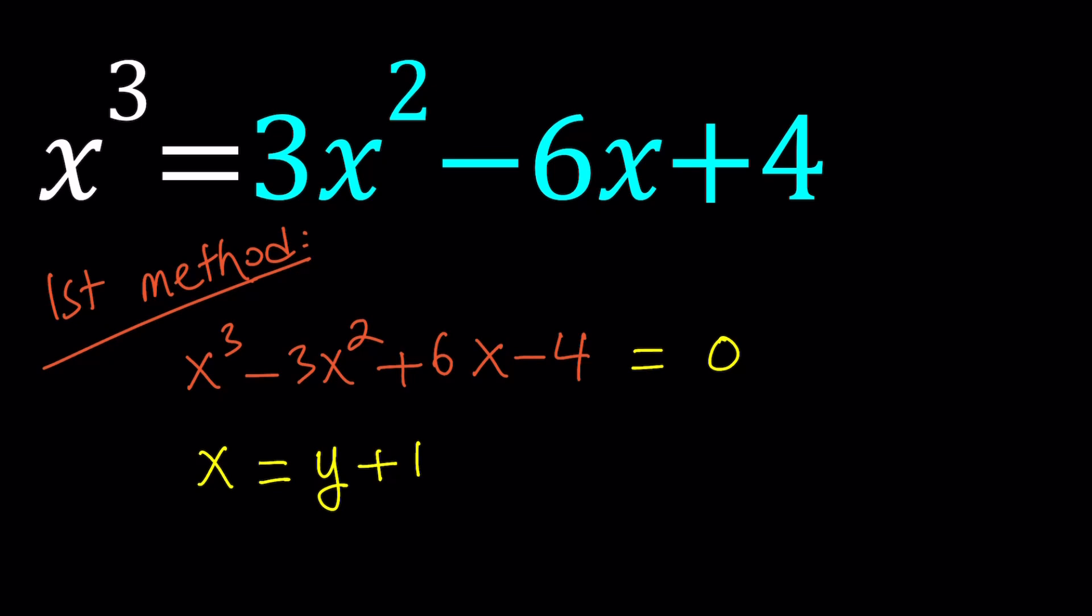Now how do we get that? How do we know it's y plus 1? So there's actually kind of a way to find it. You can replace x with y plus k, and then when you plug this in, you basically want the quadratic term to disappear. So you can set the coefficient of y squared equal to 0, and that'll give you the value of k. So there's only one value of k for which this is possible. But as a shortcut, I can safely tell you, basically, that you take the coefficient of x squared, right here, and you negate it, which is going to give you positive 3.